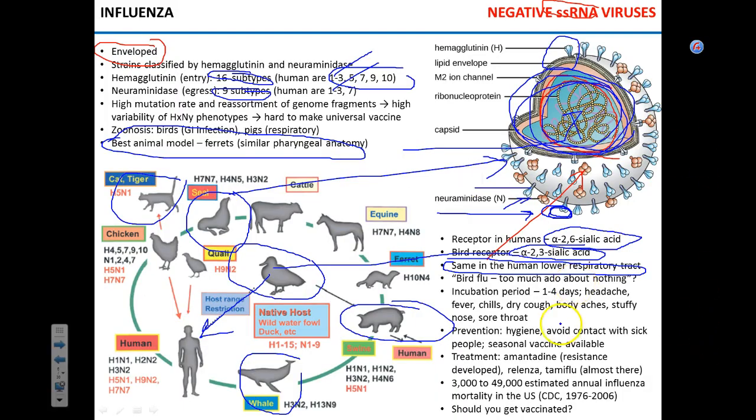Regarding mortality in the United States, 30,000 to 49,000 people die from flu every year as listed on death certificates. But that's an undercount — take a 70-year-old with congestive heart failure, give them influenza, and they may die of a heart attack. Influenza also increases the risk of cerebrovascular events (stroke) by 60–70%. Some scientists estimate that 200,000 to 250,000 people per year in the United States die from influenza or influenza-associated conditions.